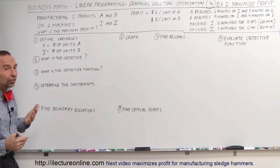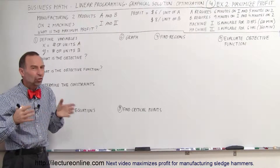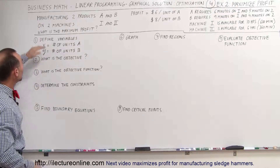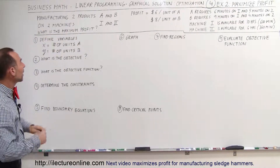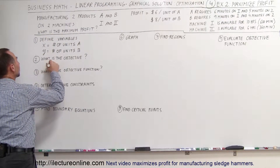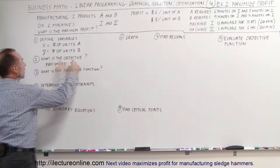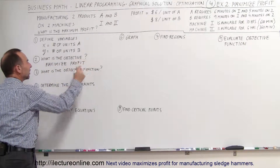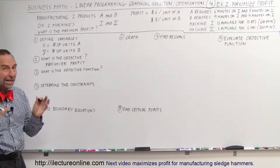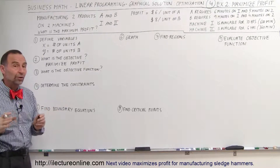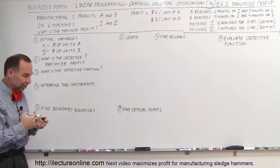Step two: figure out what the objective is. That's usually pretty clear when you read the problem. We know we'll want to maximize the profit. Sometimes it's not so obvious — you really have to figure out what it is you're trying to do, what the objective is.